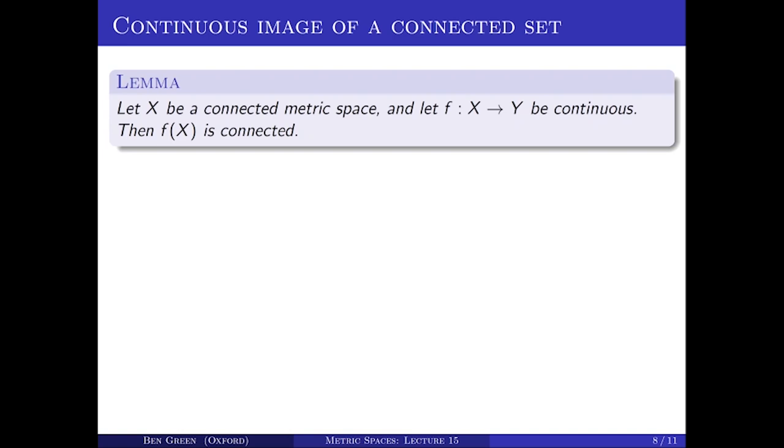The final basic property of connectedness is that continuous maps preserve connectedness — you can't take a connected, joined-up set and disconnect it by applying a continuous map. Let X be a connected metric space and take a continuous map F from X to Y, where Y is some other metric space. Then F(X) is connected.